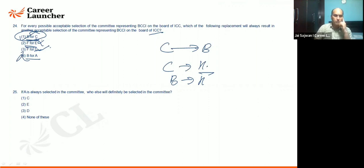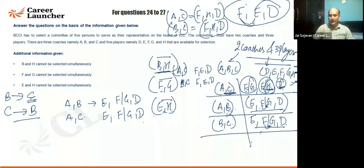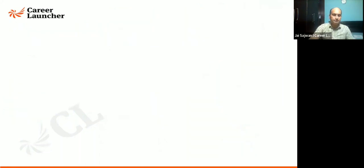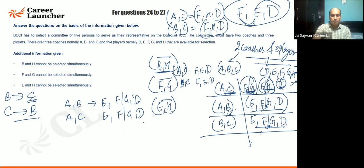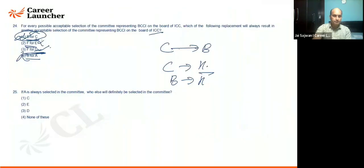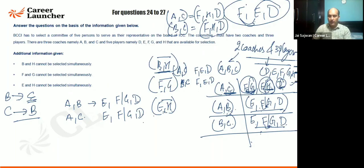So the answer is F for G — because out of F and G, one of them is certainly going to come, and there is no constraint between them directly. They can interchange freely. If A is always selected in the committee, the other member always selected is D.